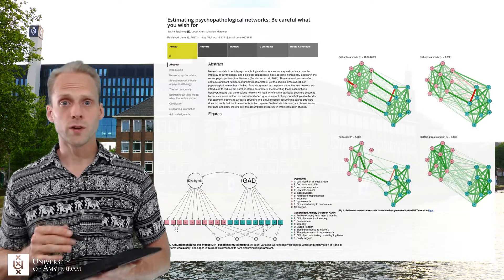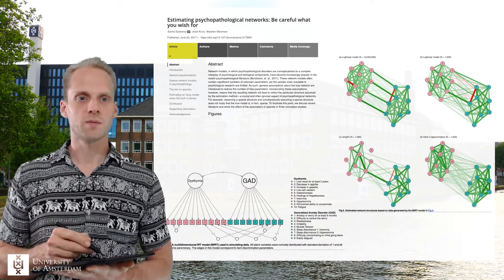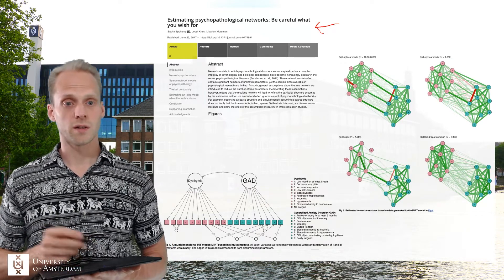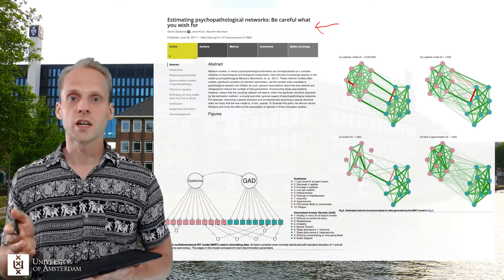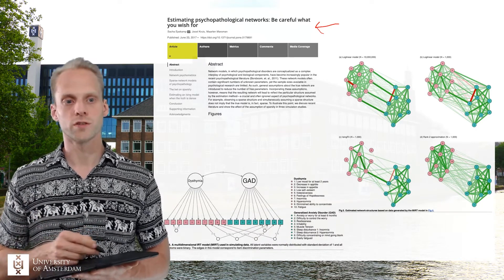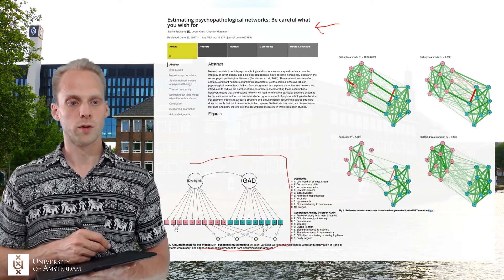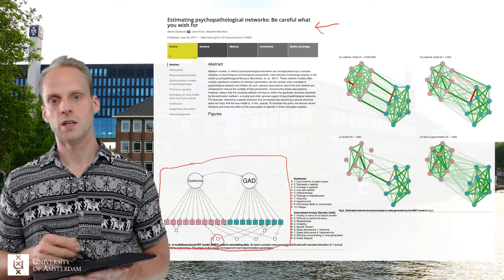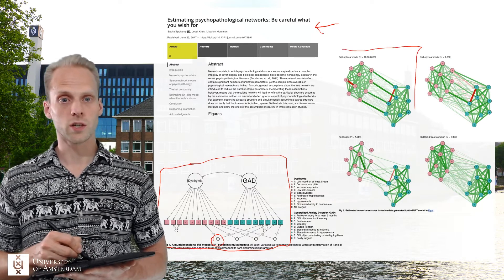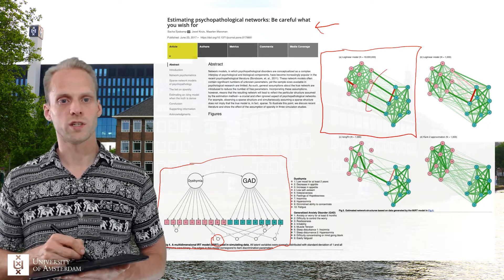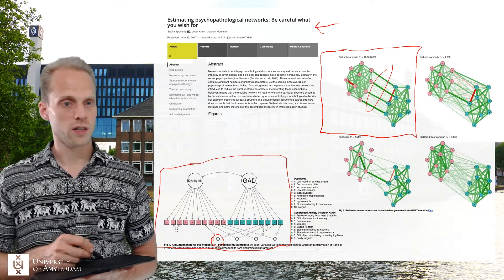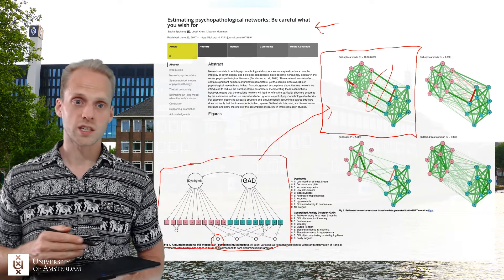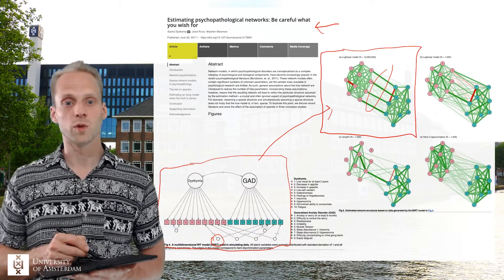The final paper that relies heavily on the equivalence between network models and factor models is one I wrote earlier together with Josh Kluis and Maarten Marschmann, where we argue that because of this equivalence, just seeing a network model does not necessarily mean a network model is true. We generated data under a latent variable model with a few residuals — like sleep problems in both disorders — and then the true expected Ising model looks like a nice Ising model with bridge symptoms that we can interpret. But that's purely artificial, because we generated the data under the factor model.